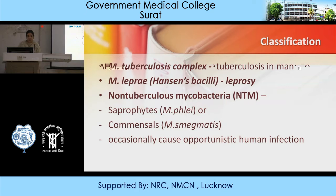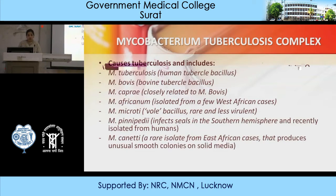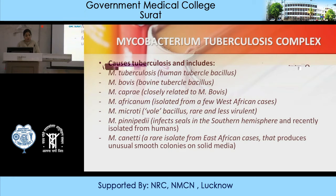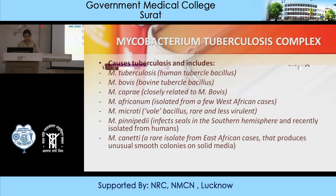The Mycobacterium tuberculosis complex includes: M. tuberculosis, the human tubercle bacilli; M. bovis, the bovine tubercle bacilli; M. caprae, closely related to M. bovis; M. africanum, isolated from a few West African cases; M. microti, a vole bacillus, rare and less virulent; M. pinnipedii, which infects seals in the southern hemisphere and recently isolated from humans; and M. canettii, a rare isolate from East African cases that produces unusual smooth colonies on solid media.